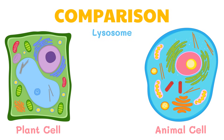Lysosomes are found in nearly every animal cell. They are common in animal cells because when animal cells take in or absorb food, they need the enzymes found in lysosomes to digest and use the food for energy. On the other hand, lysosomes are not commonly found in plant cells, because plant cells have cell walls that are tough enough to keep large or foreign substances out — substances that lysosomes would usually digest.